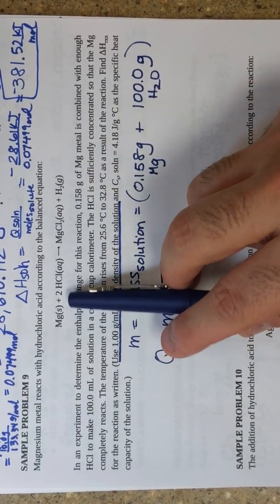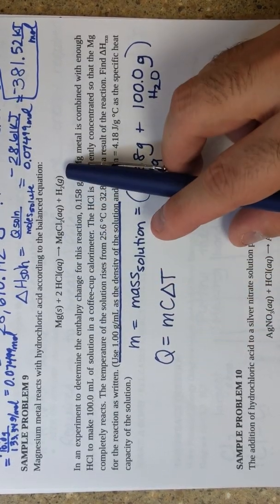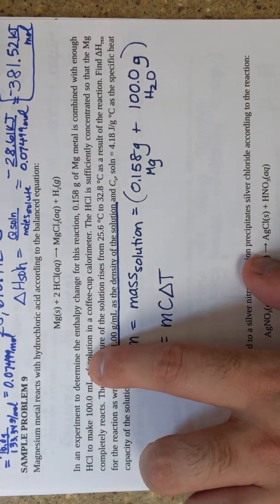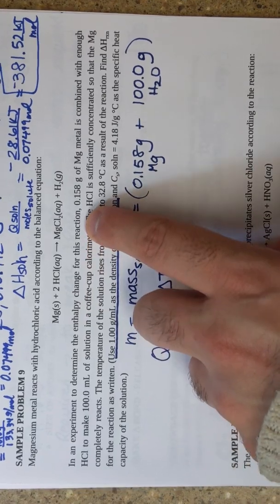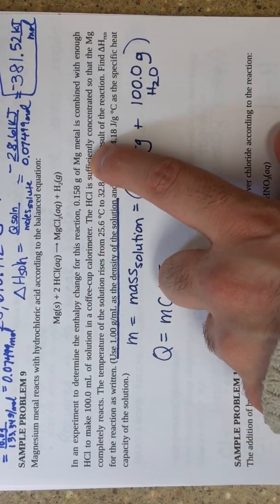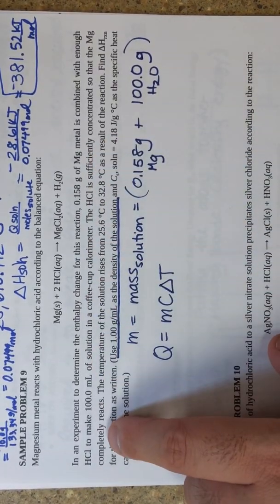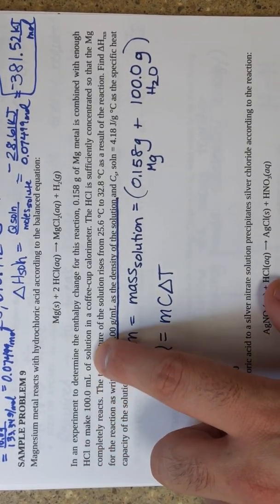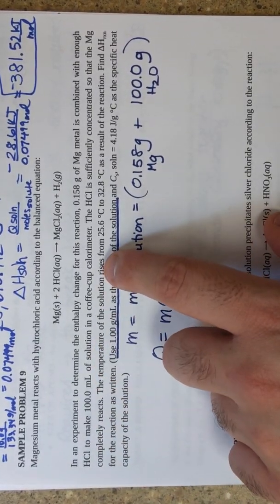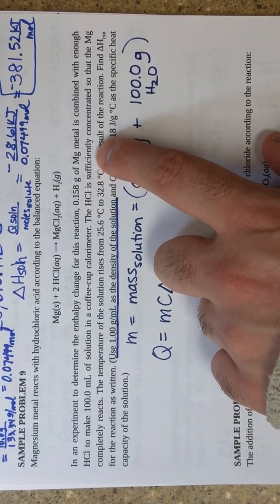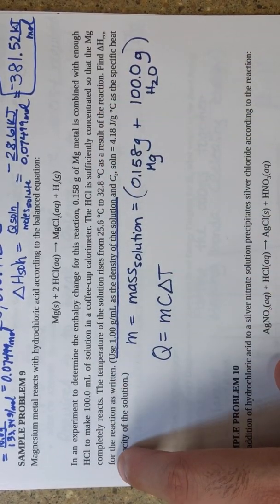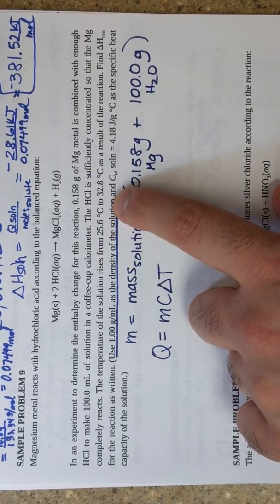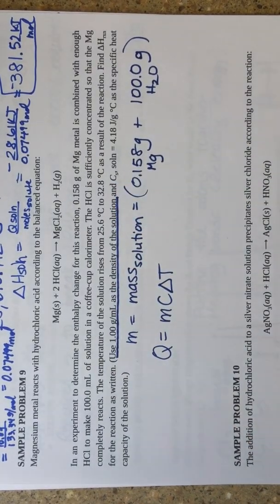It says magnesium metal reacts with hydrochloric acid according to this balanced chemical equation: Mg solid plus 2 HCl aqueous yields MgCl2 aqueous plus H2, and there's going to be some energy exchange. In an experiment to determine the enthalpy change for this reaction, 0.158 grams of magnesium metal is combined with enough HCl to make 100 milliliters of solution in a coffee cup calorimeter. The HCl is sufficiently concentrated so that the Mg completely reacts. The temperature of the solution rises from 25.6 to 32.8 degrees Celsius as a result of the reaction.